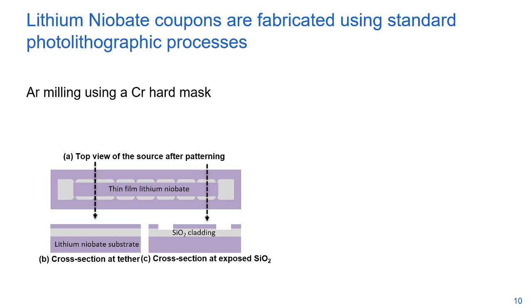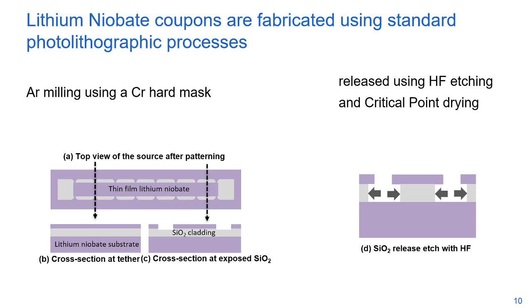For the lithium niobate coupon specifically, we use commercial 300 nanometer thin films. The wafers are purchased from NanoLN, a company in China, and fabricated using standard photolithographic processes. The coupons are simple rectangles of one millimeter by 60 microns. The tethers support the coupons from the side. We pattern both coupons and tethers using argon milling and chromium hard mask. They are released by under-etching the oxide using hydrofluoric acid etching and critical point drying.